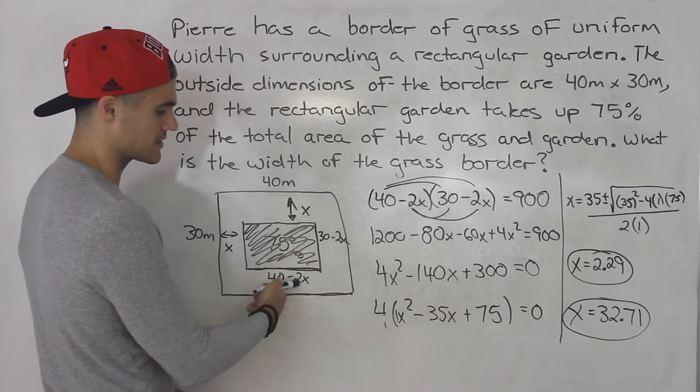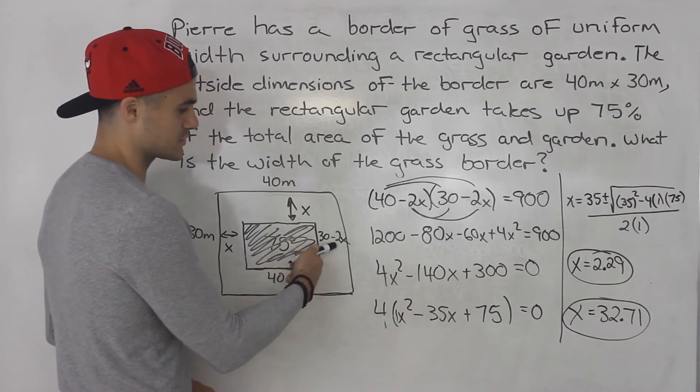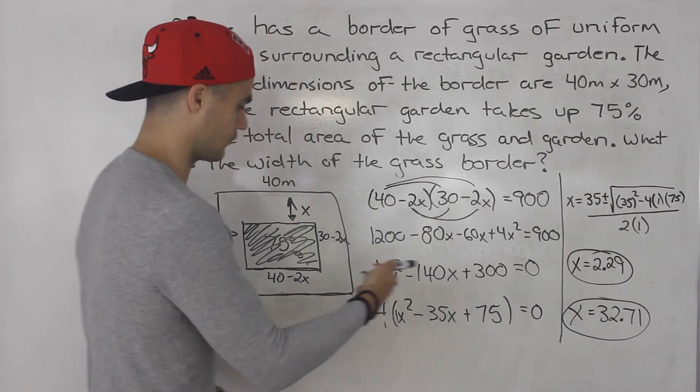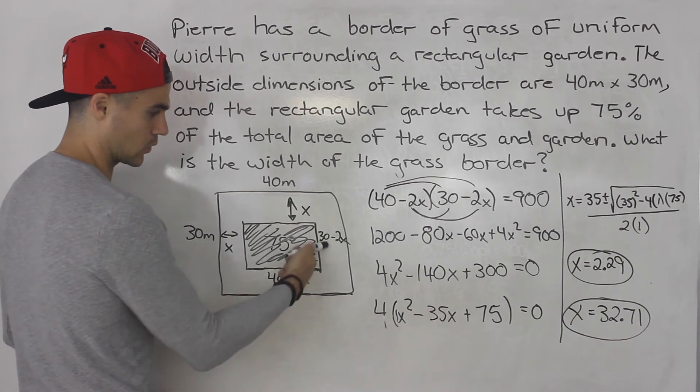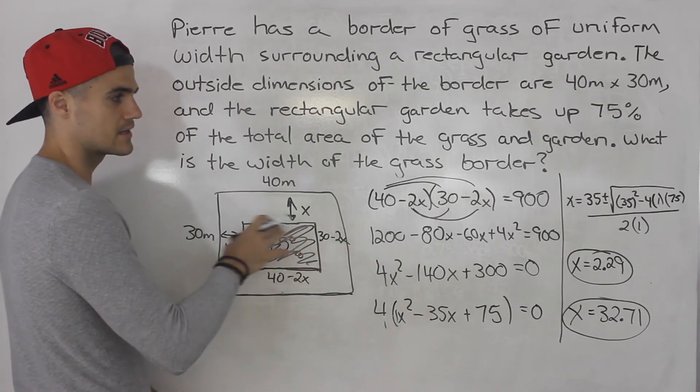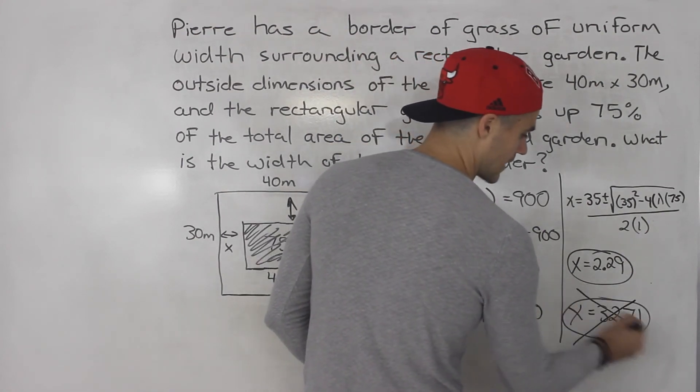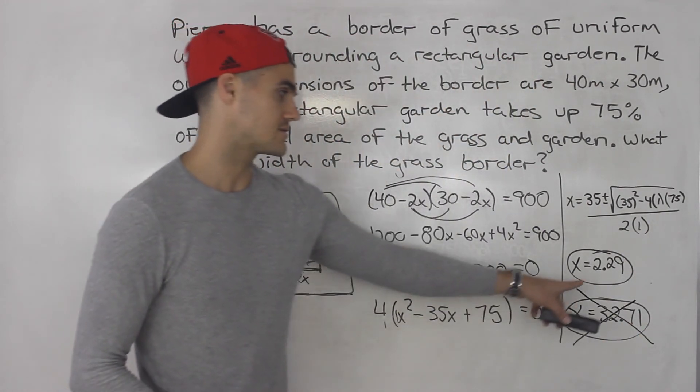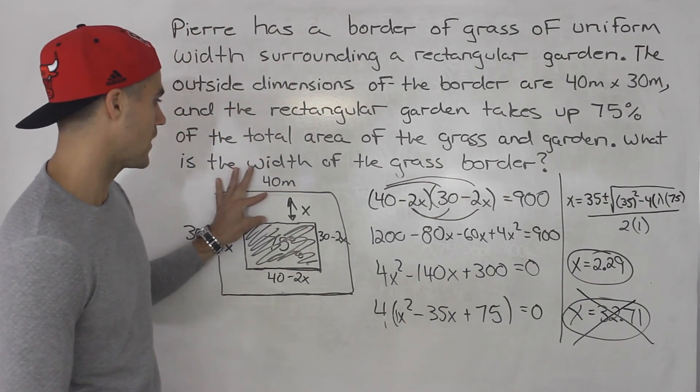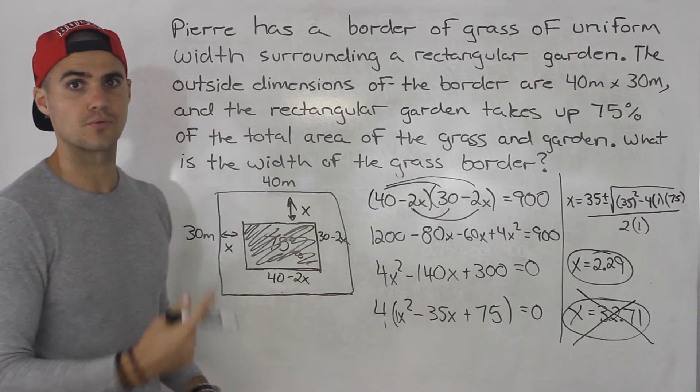So if we plug in 2.29 for x, 40 minus 2 times 2.29 that's positive. 30 minus 2 times 2.29 is positive as well. What about this 32.71? Well if we plug that in here or here we're going to get a negative length, a negative width. So we know that that solution is not going to make sense for this word problem. So we would just ignore that solution right there. So that is the answer right there, 2.29 meters. That is the width of the grass border around, the uniform width that goes around the garden.